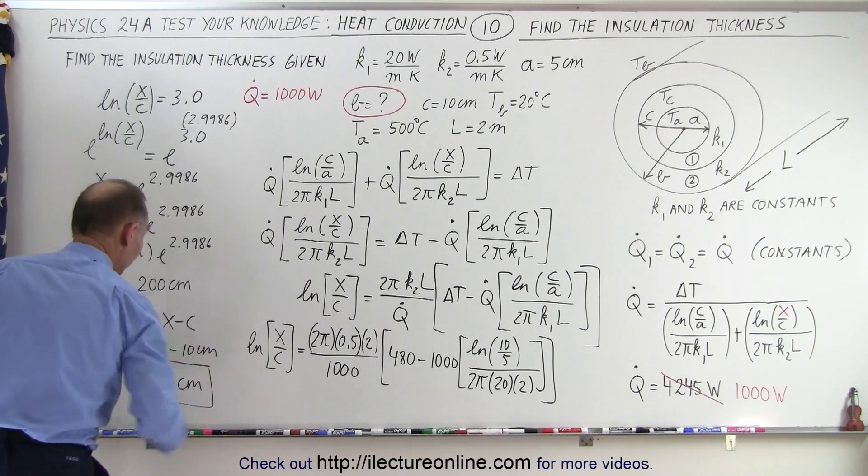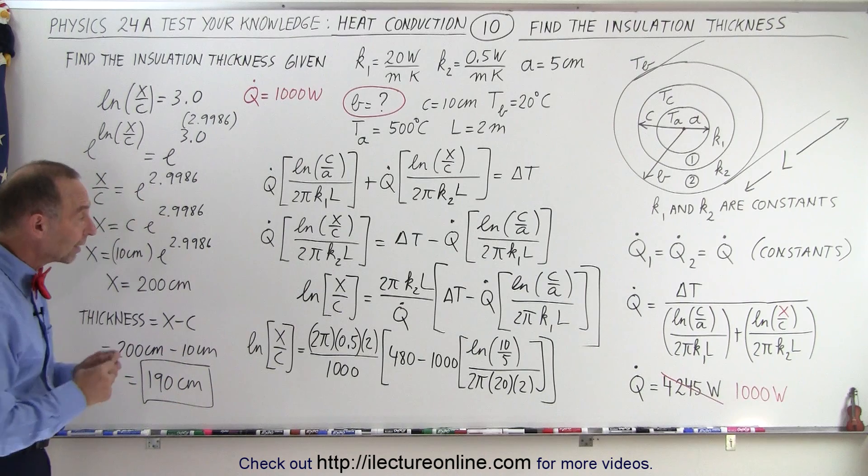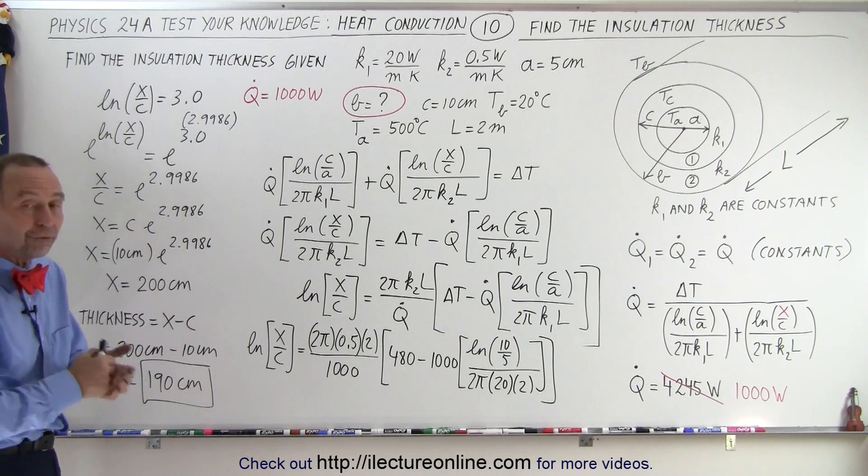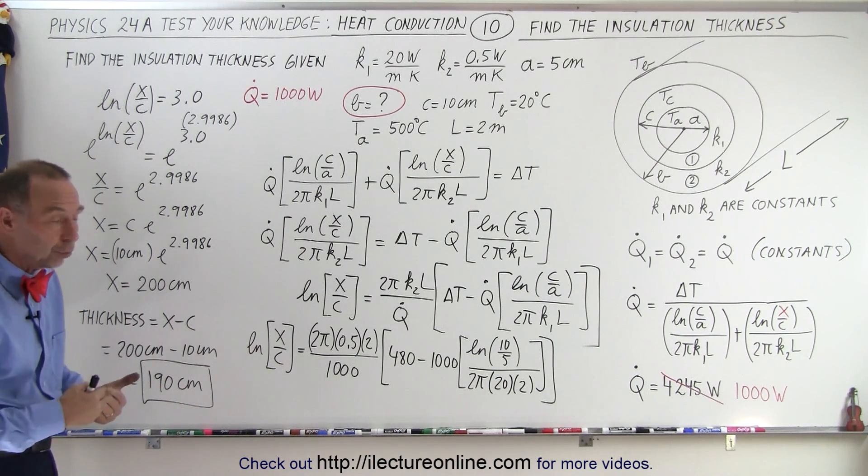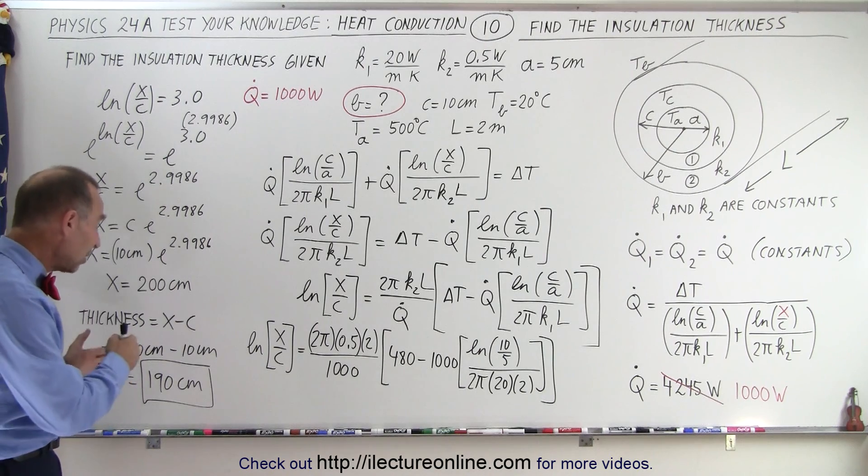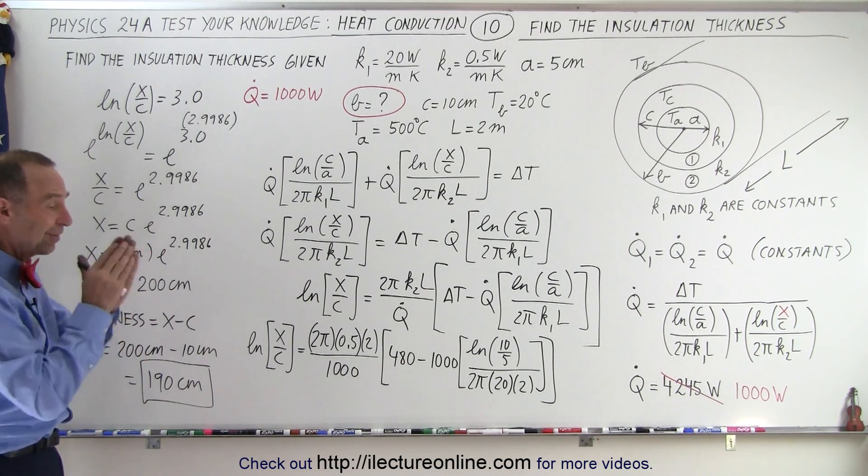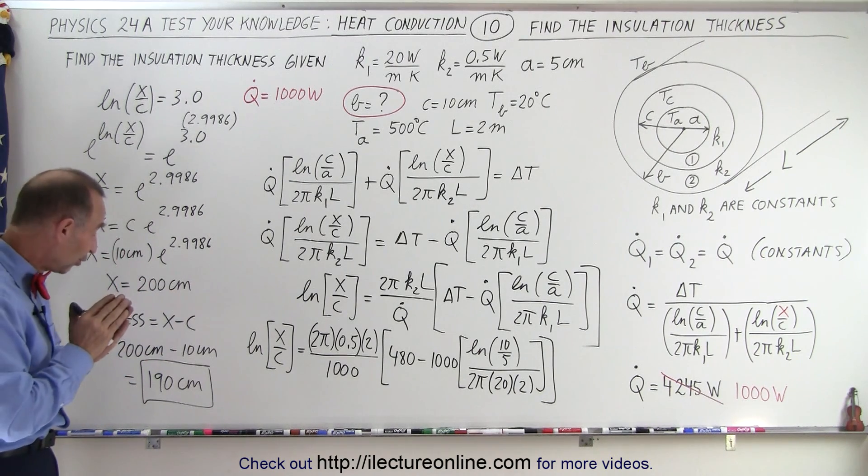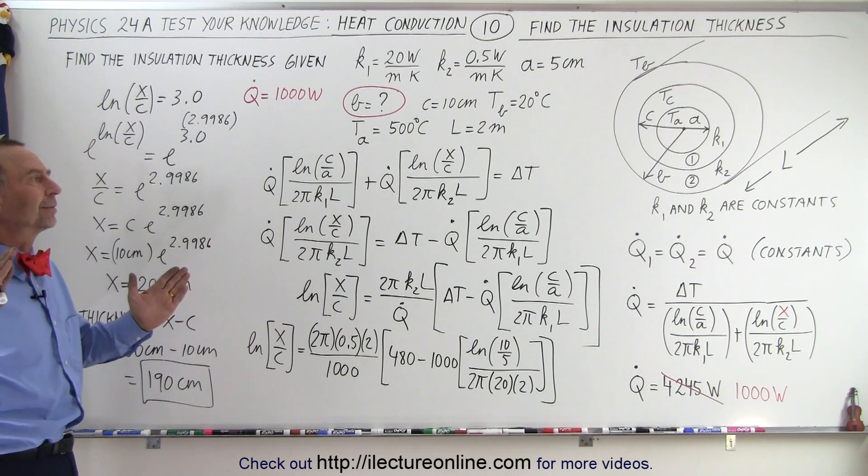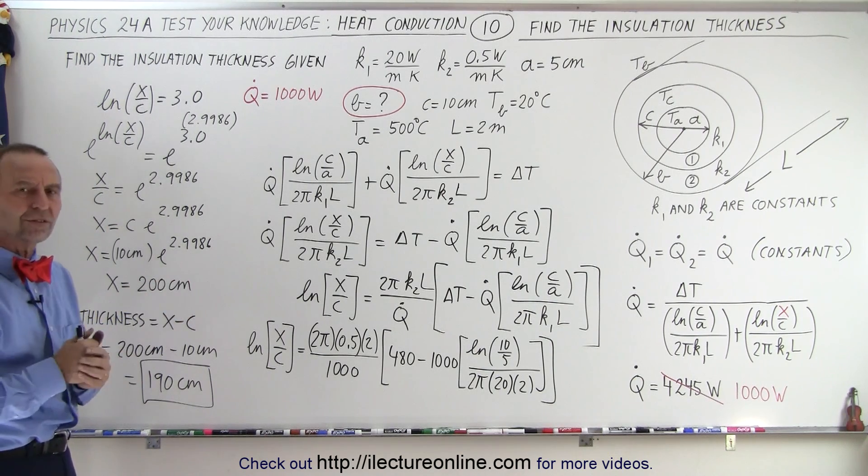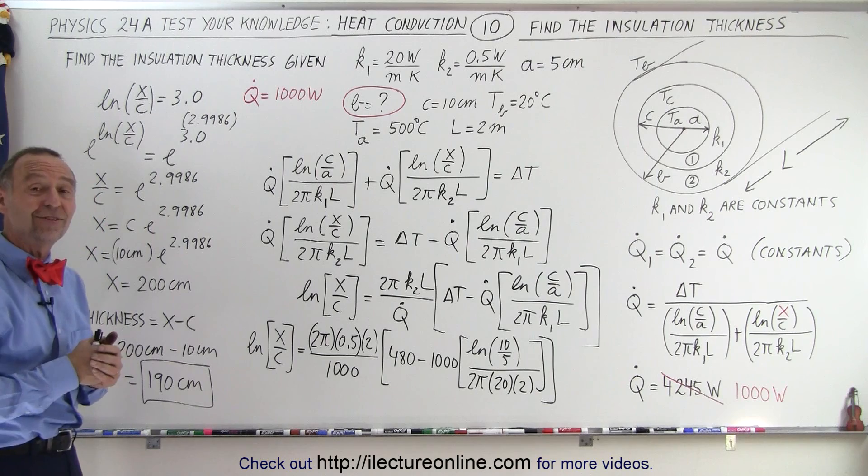So that means that if you want to slow down that heat flow from 4,245 watts or joules per second to 1,000 watts, you need to increase the thickness of the insulation from 10 centimeters, about 4 inches, all the way to 190 centimeters. Wow, that's almost 6 feet. That's quite an insulation layer.